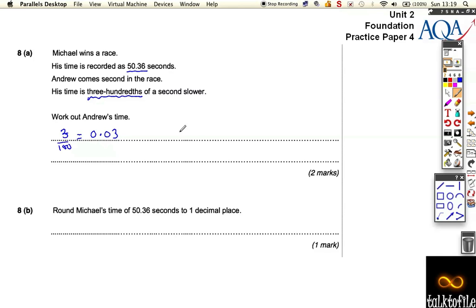Three hundredths slower means Andrew's time is 50.39, because it's got to be longer, hasn't it? It's a bit slower, quite a close race. Then, round Michael's time of 50.36 to